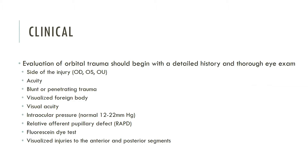A relative afferent pupillary defect refers to a decreased pupillary response in both eyes when a light is shined in the affected eye, compared to the robust constriction elicited in both eyes when a light is shined in the normal contralateral eye. This indicates an optic nerve lesion located between the retina and the optic chiasm. Significantly decreased visual acuity in the presence of a relative afferent pupillary defect were found to be the most significant factors that portend a poor prognosis after globe injury.